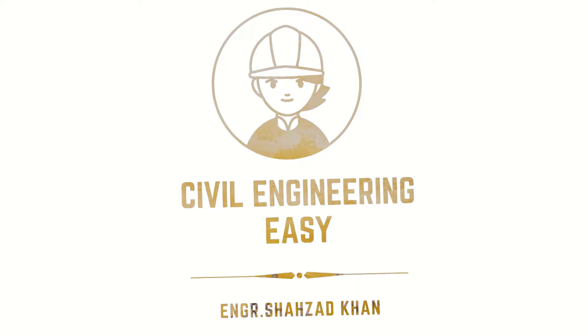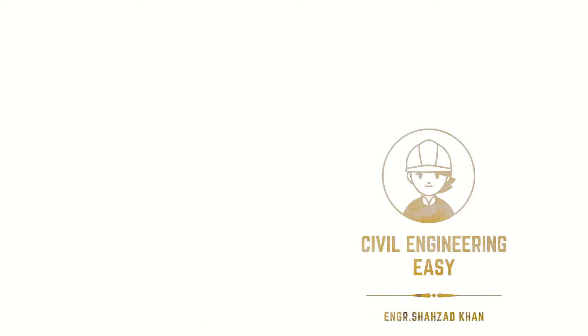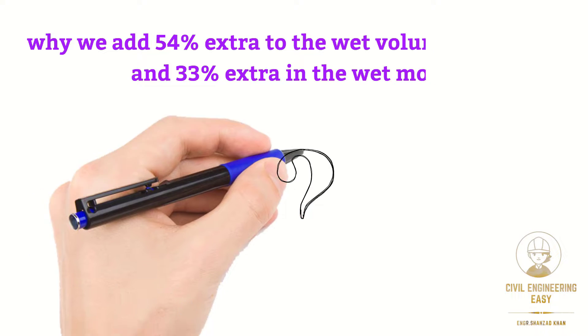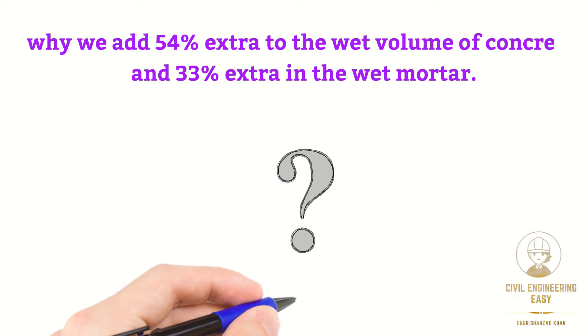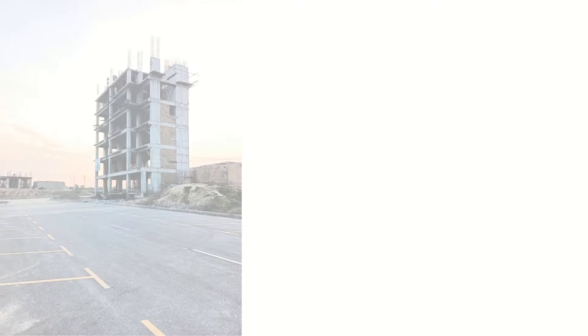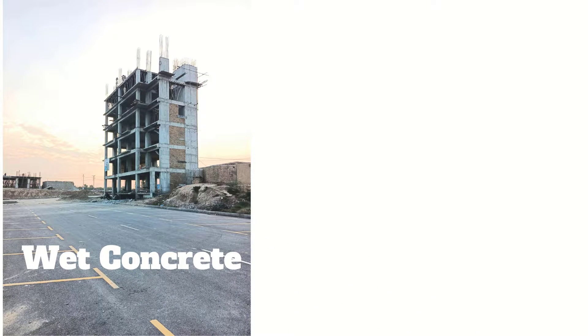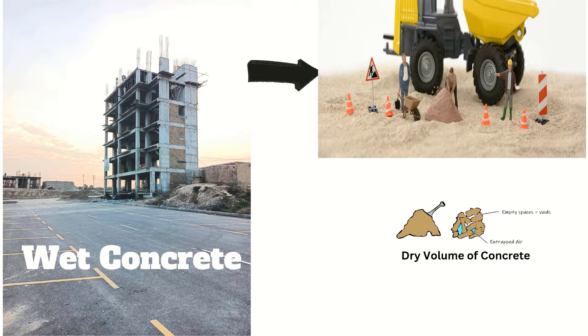Welcome back to my YouTube channel. In this video I will explain why we add 54 percent extra to the wet volume of concrete and 33 percent extra in the wet mortar mix. When we estimate the volume of a concrete structure, we get the volume of wet concrete and have to convert this into the dry mix concrete volume.